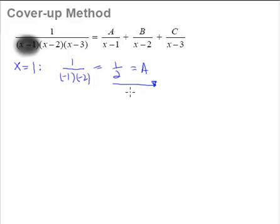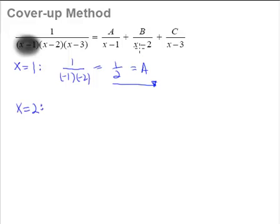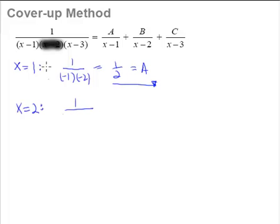Is this fast? Well, obviously it's way faster than multiplying throughout. Those of you who can work this out mentally can figure out A equals half very quickly. Now, how do we find B? Same thing — we look at the denominator beneath B and substitute in x equals 2, covering up the x minus 2 factor on the left-hand side. So 2 minus 1 is 1 and 2 minus 3 is negative 1, giving us negative 1. So B equals negative 1.